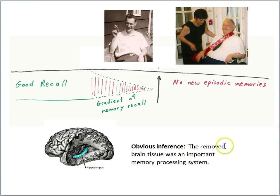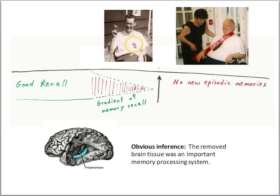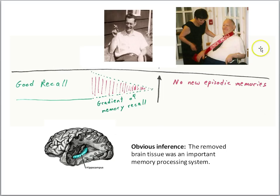One thing was clear from HM's condition: the removed brain tissue was an important memory processing system. HM spent most of his life under the care of his parents and then other people, because his memory disturbance prevented him from living a normal life. He died in 2008, and his brain was dissected and continues to be studied by scientists. He will go down as one of the most famous neurological patients in medical history.